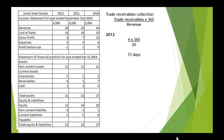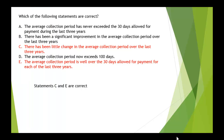Working it out: 2012 is 73 days, 2011 is 73 days, and 2010 is 75 days. There hasn't been any great change, though 2010 was in fact the largest period. Two statements are correct: first, there has been little change in the average collection period over the last three years; and second, the average collection period is well over the 30 days allowed for payment for each of those last three years. So statements C and E are correct.